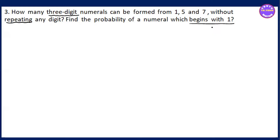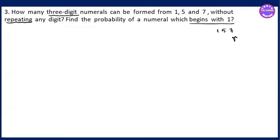Without repeating any digit, find the probability of a numeral which begins with 1. So one digit is 10 digits, so it's 100 digits, so three digits are 100 digits.